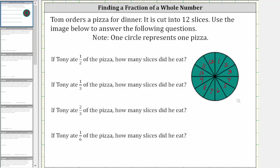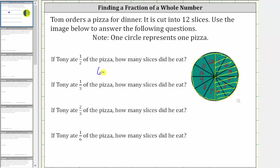To model this, we can cut the pizza into two equally sized parts and then shade one of the two parts. And now we can see half of the pizza is equal to six slices. This is because half of 12 is six.